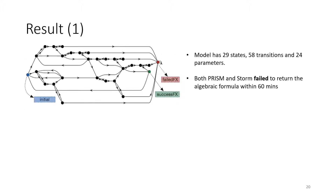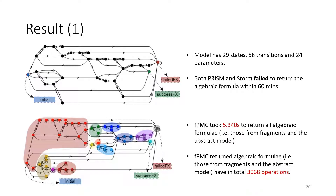For one example model, both PRISM and STORM failed to return expressions within a six-minute time frame, but FPMC managed to return all expressions within six seconds. The states grouped in different colors in the figure represent different fragments formed during the process, which has 13 fragments in total.